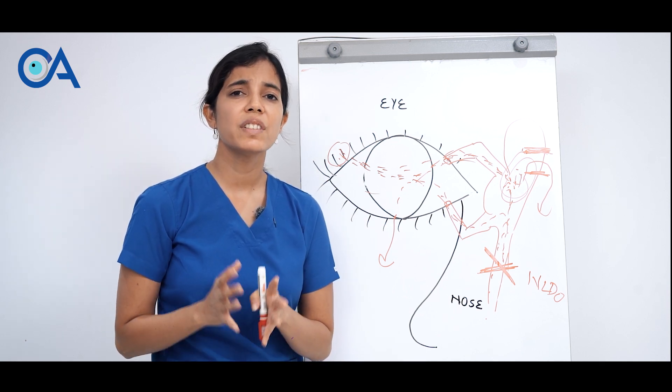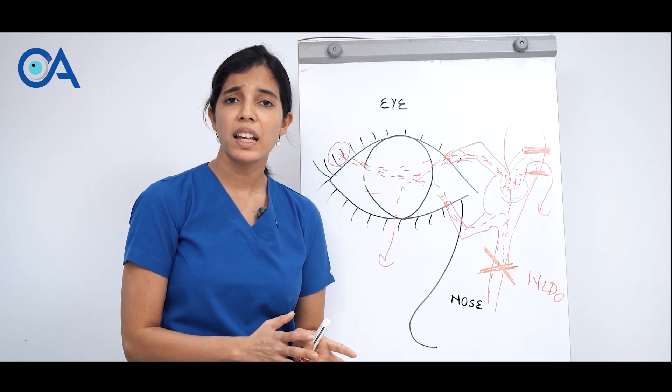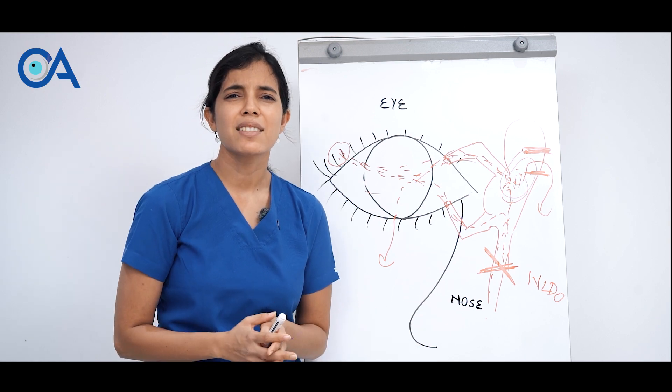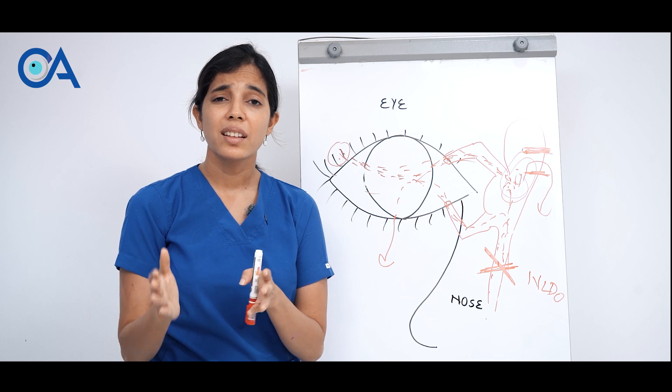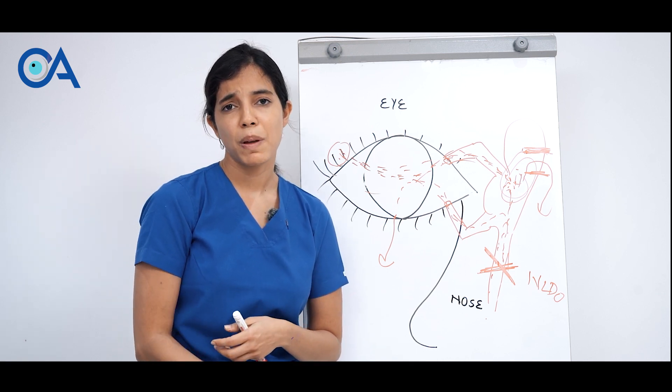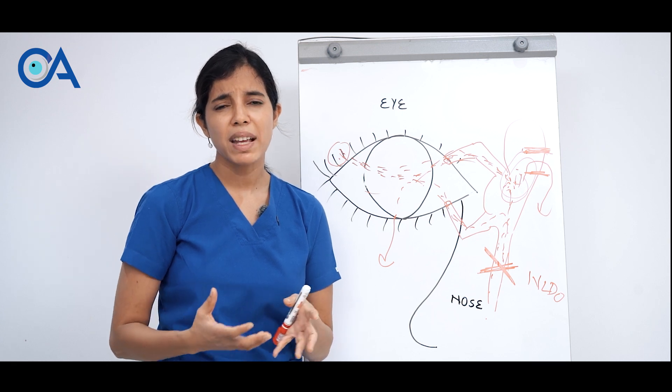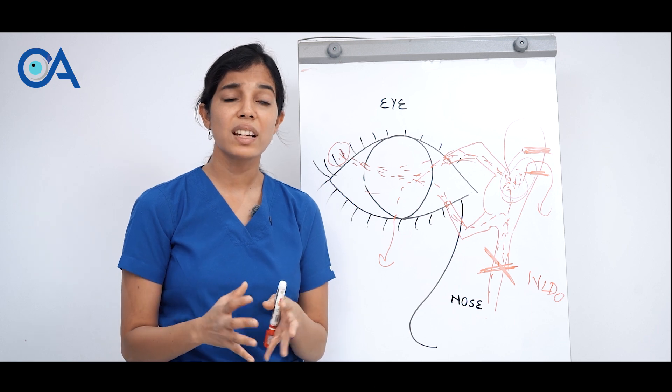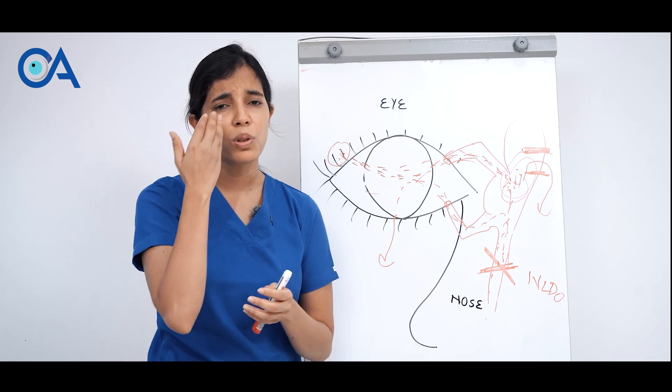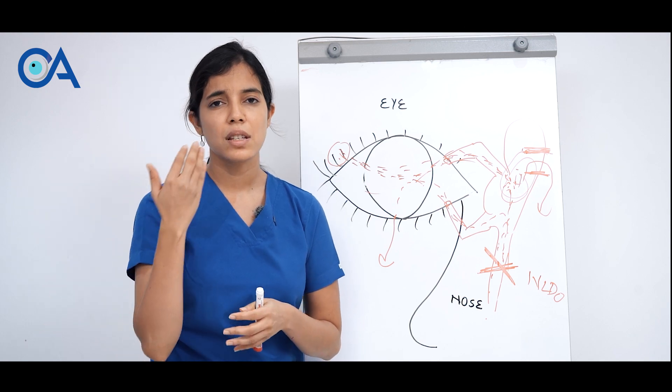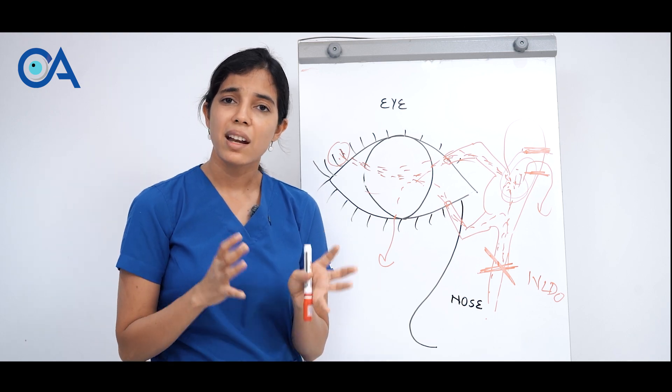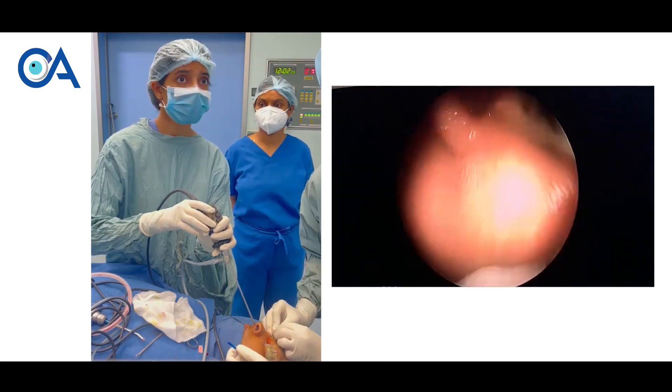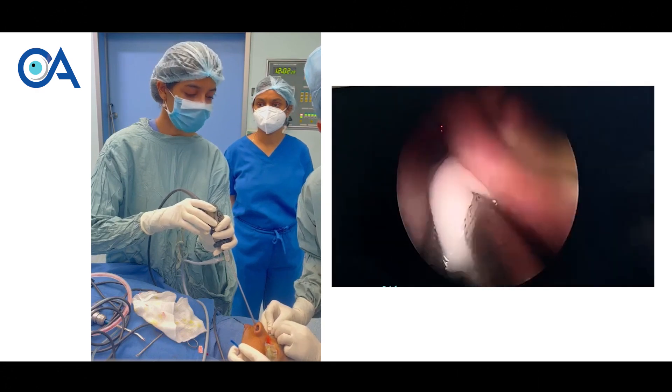In our hospital we do both types of surgeries, endoscopically and externally, based on what is right for the patient. Different patient factors like anatomy of nose, age group, patient expectations, the reason. Based on all these things we decide which route we prefer. The issue is a lot of eye hospitals do only an external route and a lot of ENT hospitals do only an endoscopic route. But at our hospital we do both of them and hence we can provide you better chances of success and better outcomes based on what you really need.